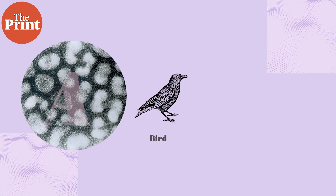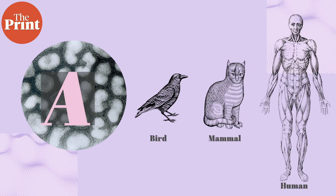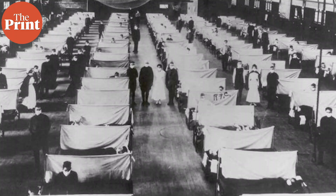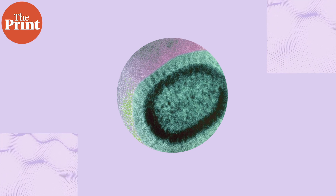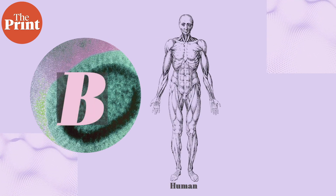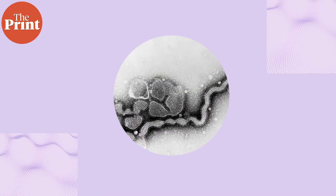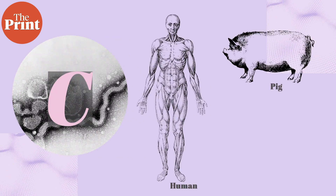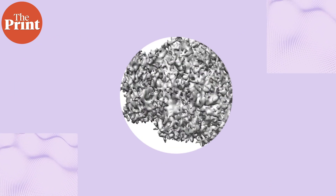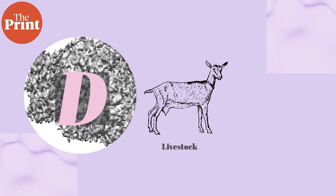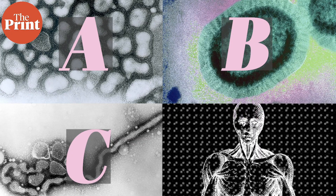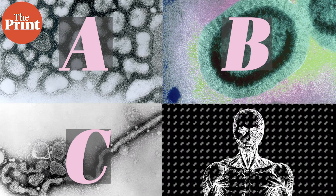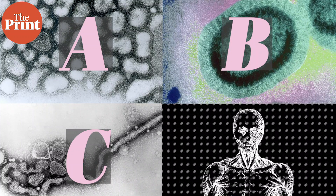These are also referred to as influenza A, B, C, and D respectively. Alpha influenza virus, or influenza A, affects birds, mammals, and humans and has caused pandemics in the past, such as the 1918 Spanish flu. Beta influenza virus, or influenza B, affects humans and seals. Influenza C affects humans, pigs, and dogs, while influenza D affects livestock, pigs, and cattle. Influenza A, B, and C are thus of concern to us because they can spread to humans.